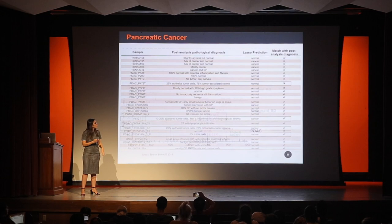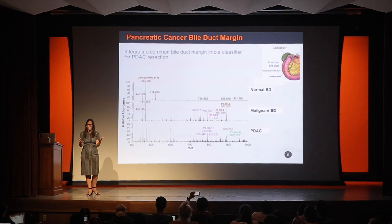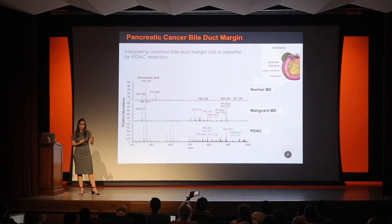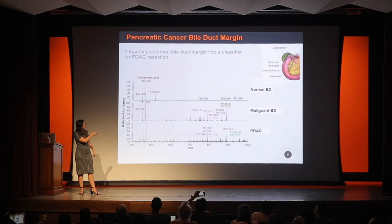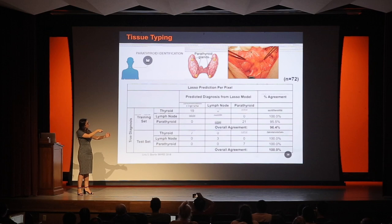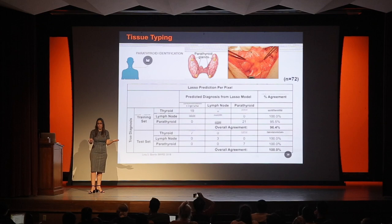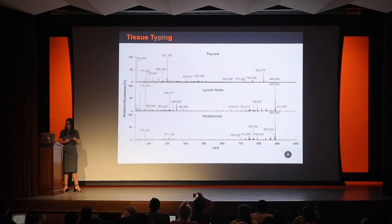We also look at metastatic tissues. There are many patients diagnosed at an advanced stage with metastatic cancer, and identifying sites of metastasis is really important for improving survival chances. For example, this is a bile duct completely infiltrated with pancreatic cancer — its profile looks much more similar to pancreatic cancer than normal bile duct, showing we can identify cancer even in metastatic positions. Going back to tissue identification — for parathyroid versus lymph node, we've been typing tissue and getting about 100% agreement. Different organs have completely different profiles, making organ identification really easy for us.